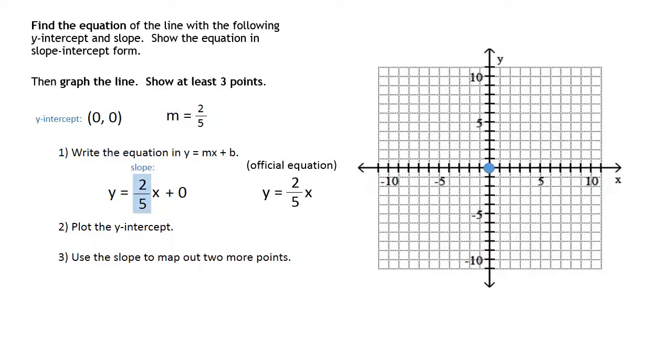So the 2 over 5 that they gave us and that we put in our equation, we're going to use that as an up 2 right 5, or going in the other direction, you can go down 2 left 5. So let's start at the origin and start plotting these extra points. So we're going to go ahead and do an up 2 right 5 point, and then come back to the origin because you're feeling like going in the other direction.